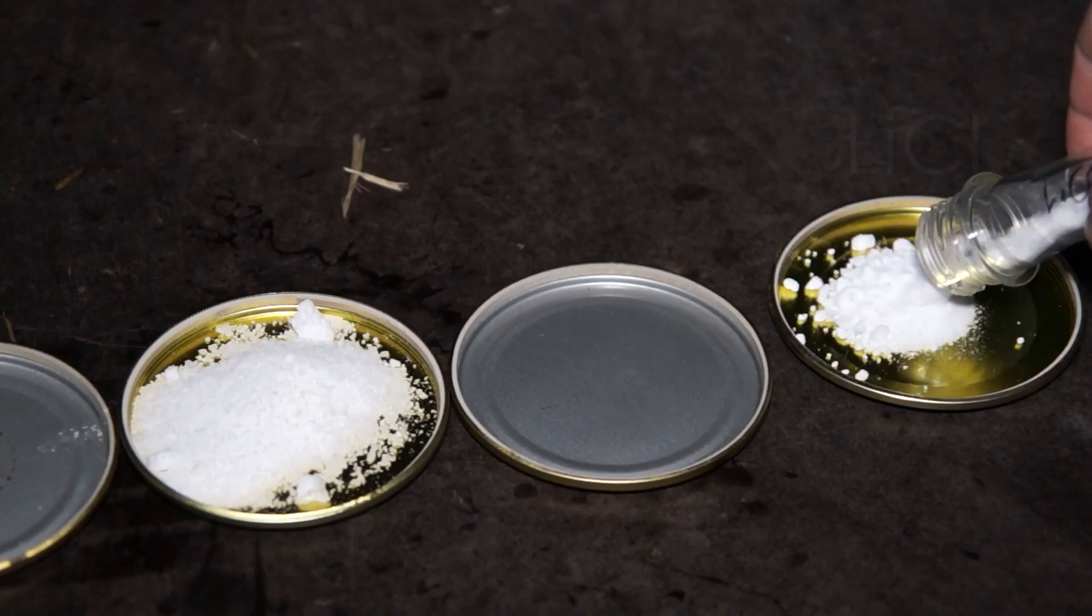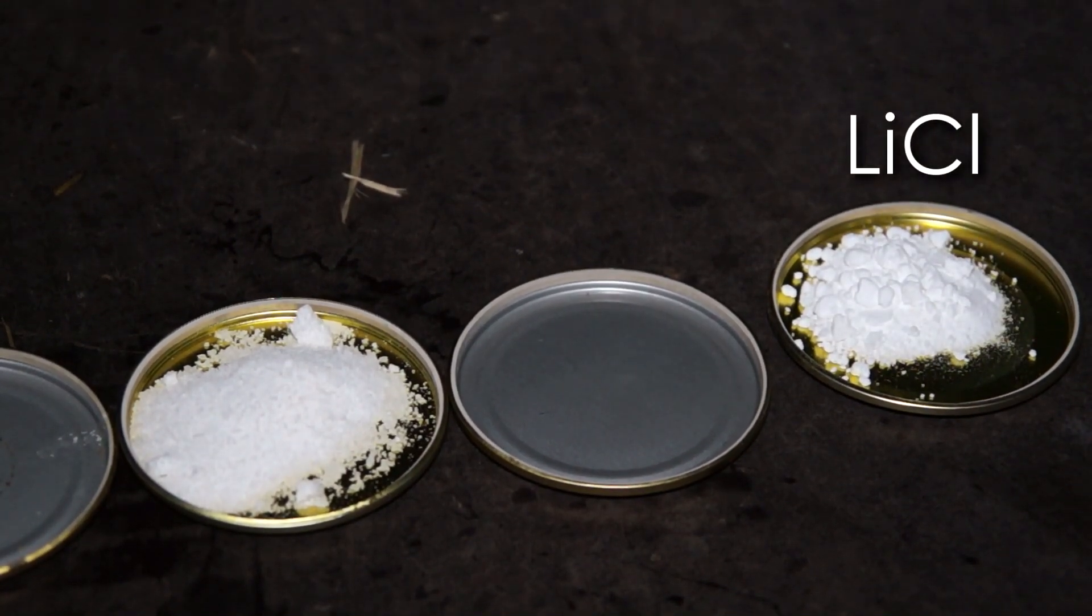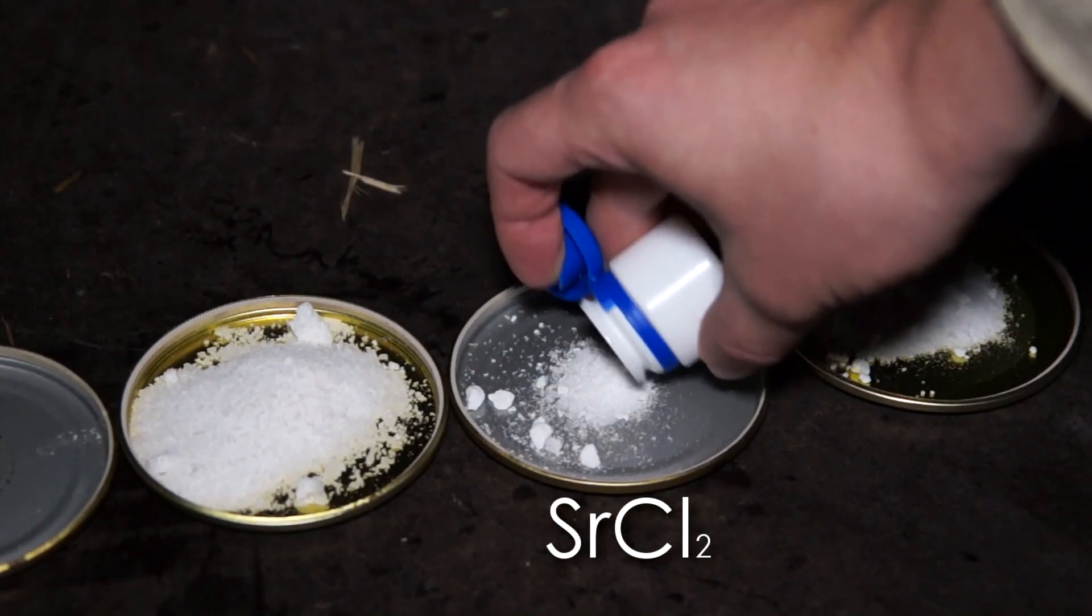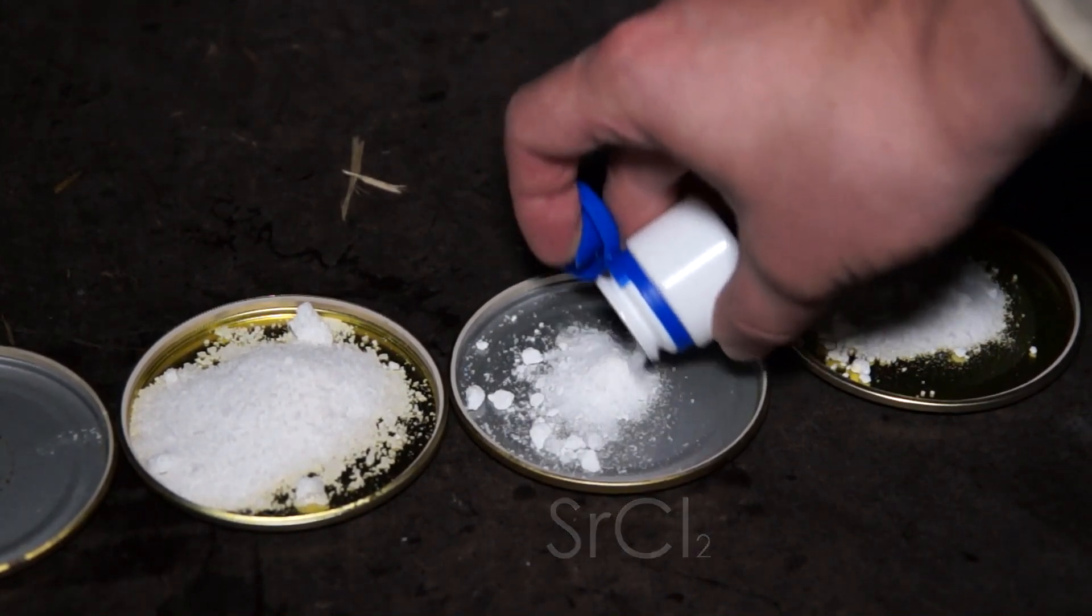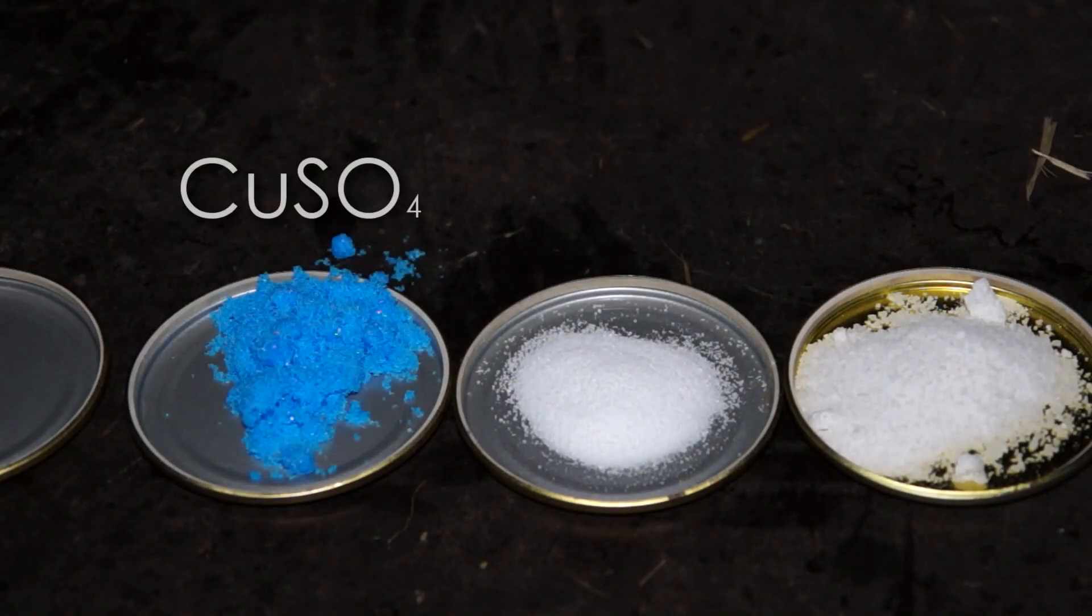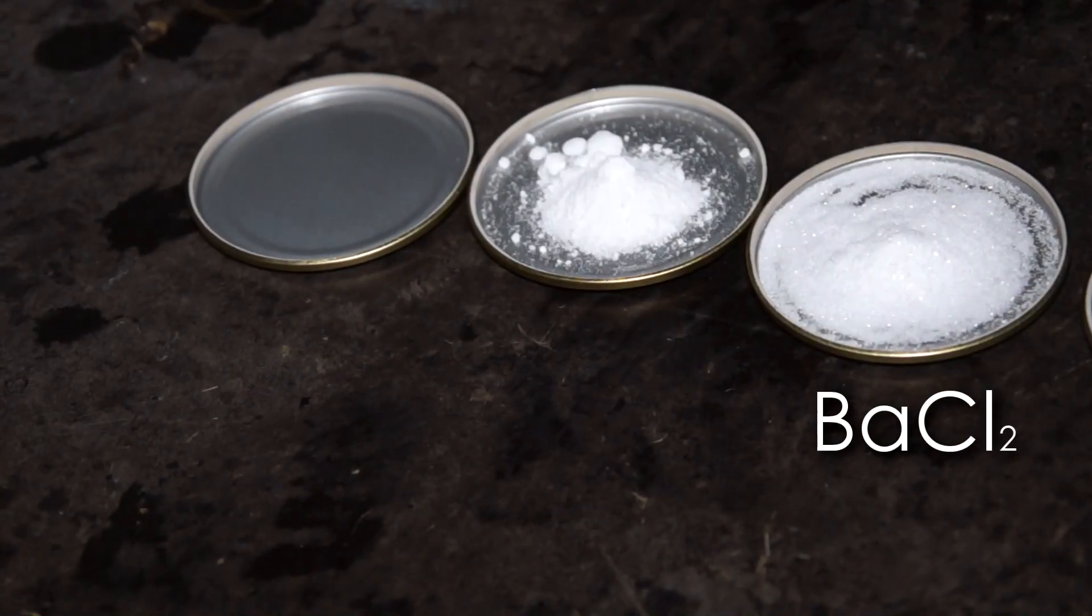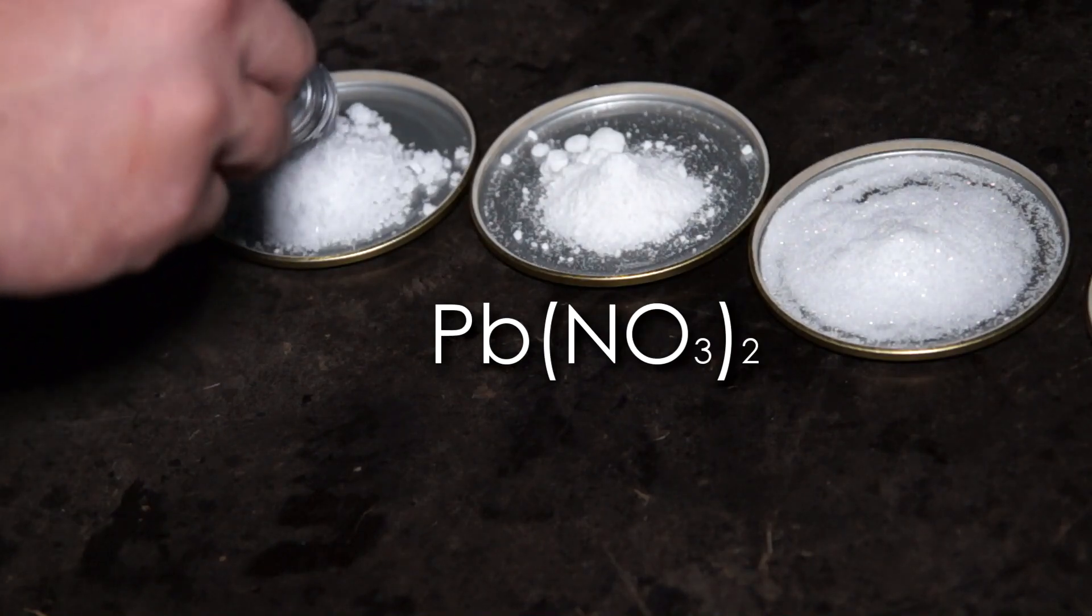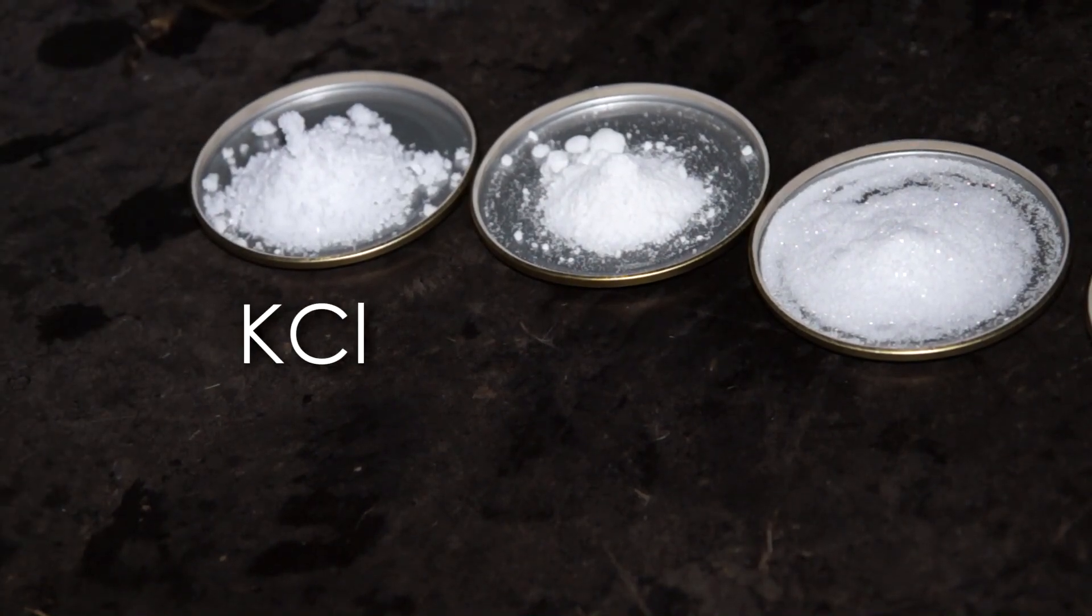The next one is lithium chloride which I pour in the first cup. It will paint the flame in red carmine color. Then I pour strontium chloride. Next substance is boric acid. After is bluestone. Then I pour barium chloride. Next goes lead nitrate and in the end potassium chloride.